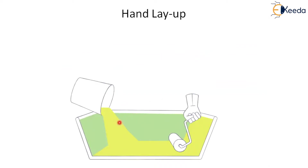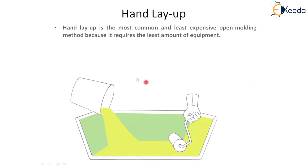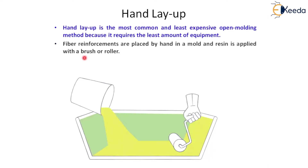If you see the image here, this image shows simple equipment in which the resin material is poured, and a pressure roller is available with which we apply pressure on the materials. The hand layup method is the least expensive open molding method because it requires the least amount of equipment. The fiber reinforcements are placed by hand into a mold and resin is applied with a brush or roller. First a resin coating is applied, then fiber reinforcements are placed at various positions, and resin is applied again.